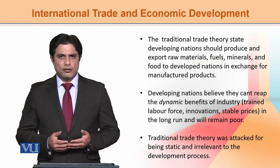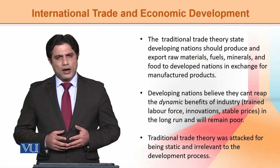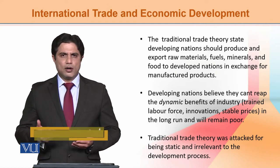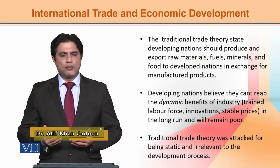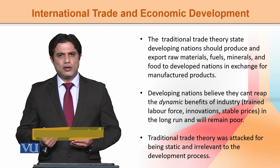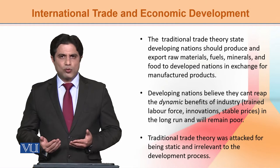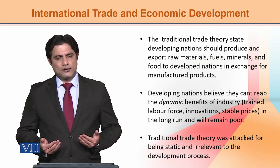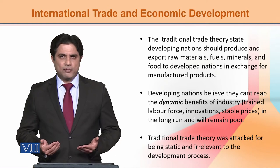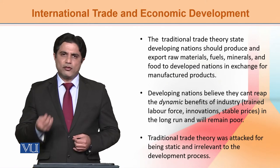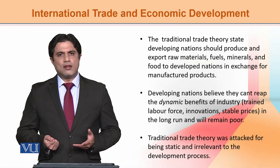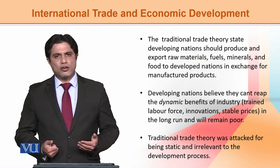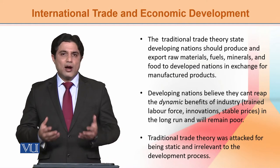जहाँ आपके पास comparative advantage है, आप उस चीज़ के production ज़्यादा से ज़्यादा करें। Suppose Nation 1 है, वहाँ पे labor ज़्यादा है, तो उसको labor intensive commodities की तरफ जाना चाहिए production की तरफ। Nation 2 है suppose, तो वहाँ पे capital intensive commodities की तरफ जाना चाहिए। तो यहाँ पे trade possible हो सकती है क्योंकि specialization होगी — एक nation के अंदर labor intensive goods में और दूसरी nation के अंदर capital intensive goods में — और overall पूरी world को फाइदा होगा।